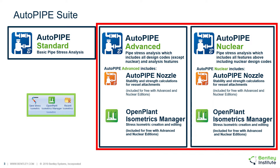The icons and ribbons are shown here to open OPIM and the recently created isometrics. This icon group is found on the file ribbon tab in Autopipe.